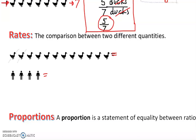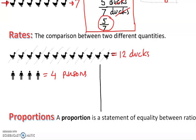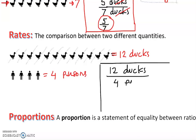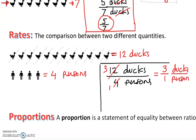Counting the duckies: one, two, three, four, five, six, seven, eight, nine, ten, eleven, twelve — so I have twelve ducks. And clearly there are four persons. Now we're going to form this into a rate. I can say twelve ducks versus four persons. Reducing, that gives us three to one, so three ducks per person.